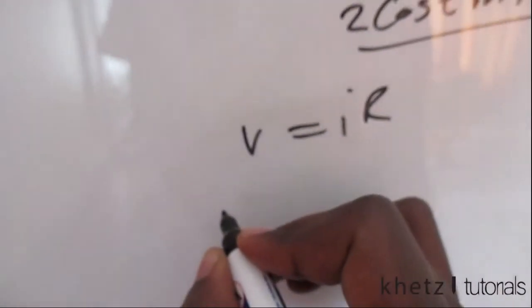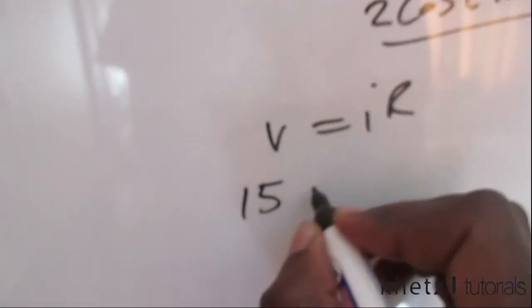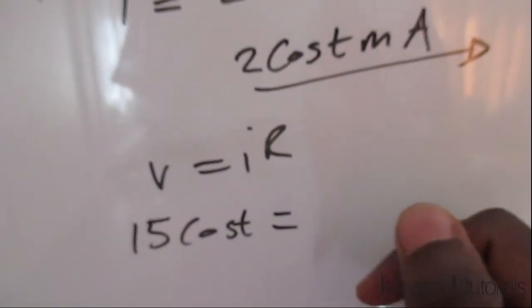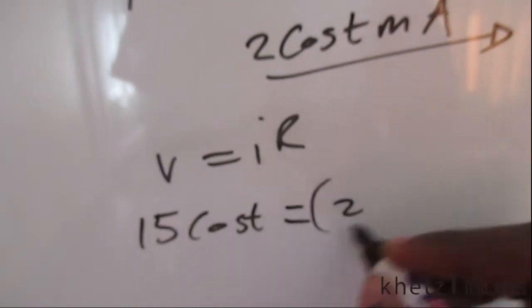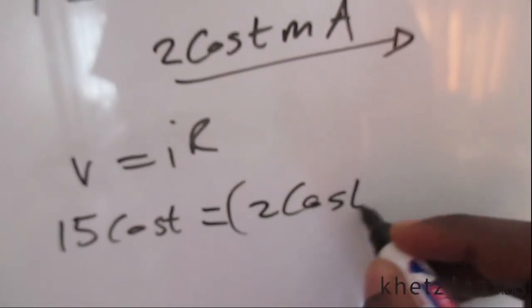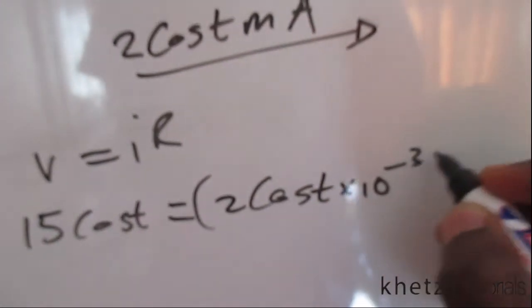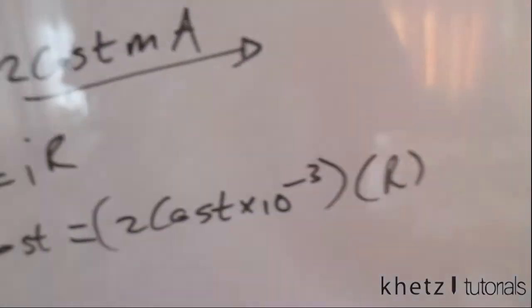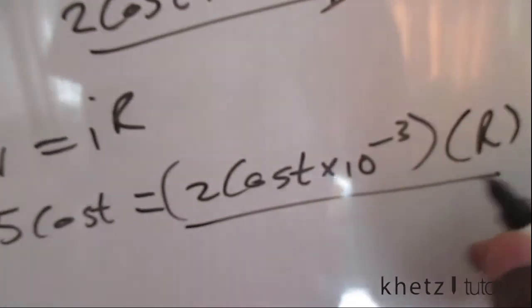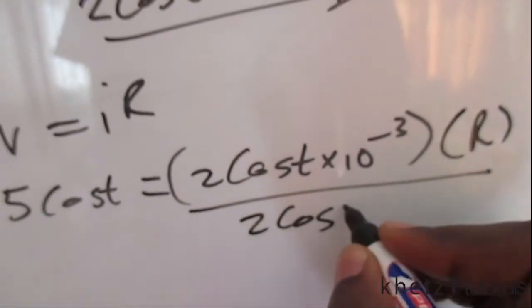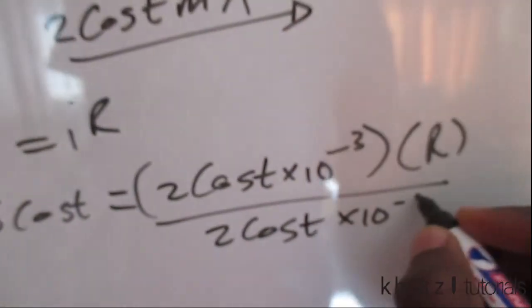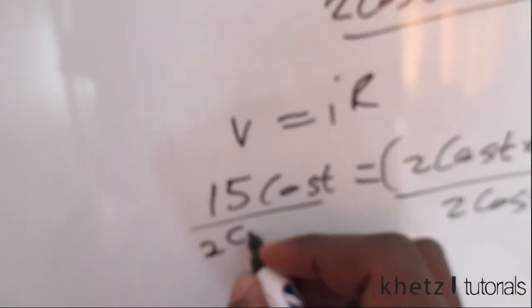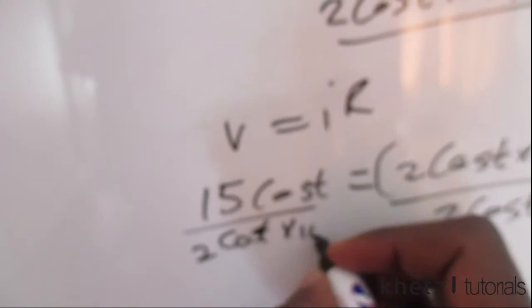Plug in the voltage given as 15 cos t volts equals I, which we just calculated as 2 cos t times 10 to the minus 3, and the variable we're looking for is R. So dividing both sides by 2 cos t to have only R on this side, 2 cos t times 10 to the minus 3.